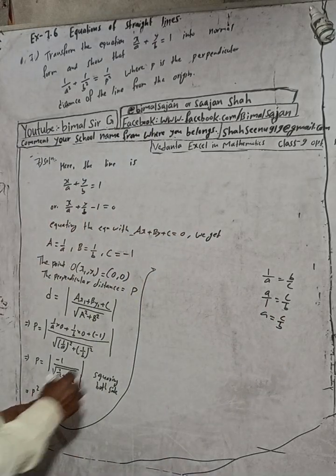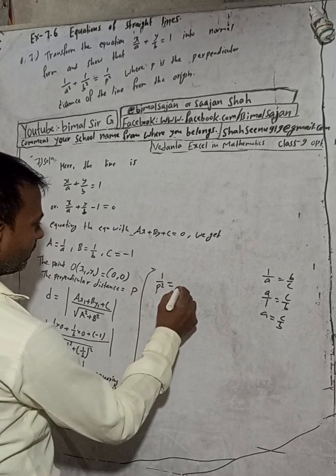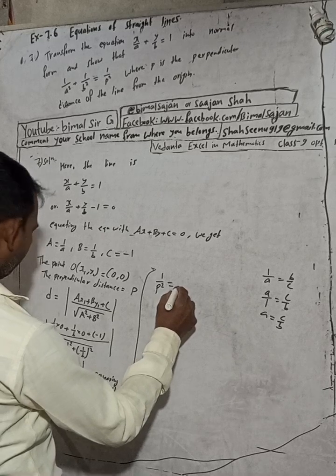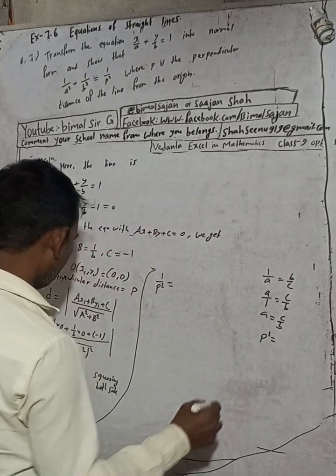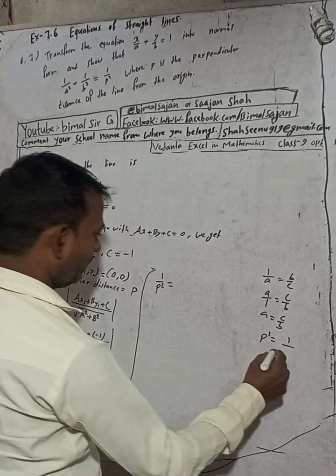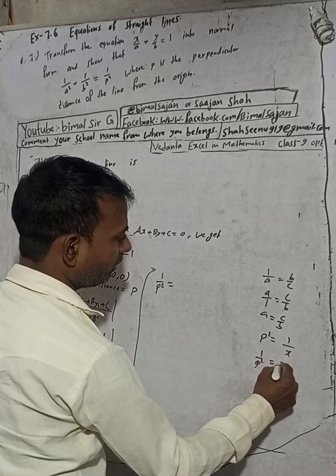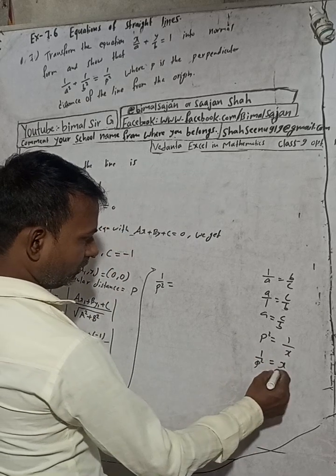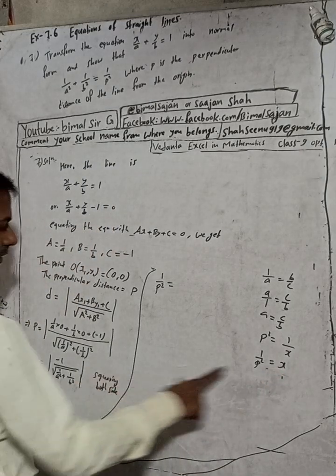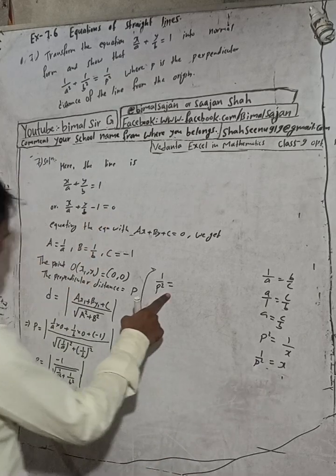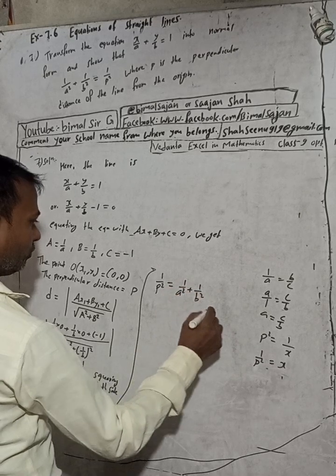Same we will do here. This is p², then we can write 1/p² equals, now this will go upside, so upside this will be what? We can write 1/p² equals, so this is p², we'll do same here, this will be 1/a² plus 1/b². Proved. Therefore, so this is the solution.